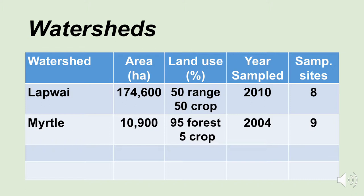The Lapwai Creek watershed is in Nez Perce County, about 174,000 hectares in size. This watershed was about 50% rangeland and 50% cropland. It was sampled in 2010 and there were eight sampling sites within this watershed.